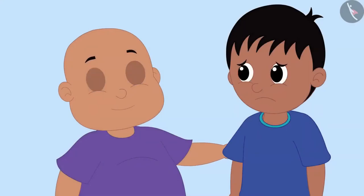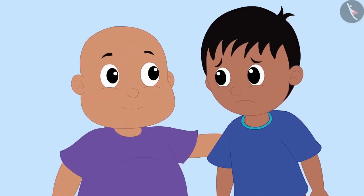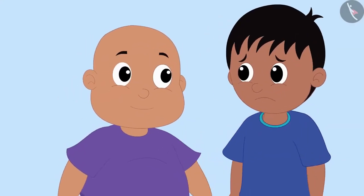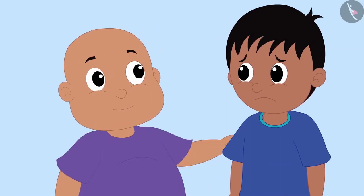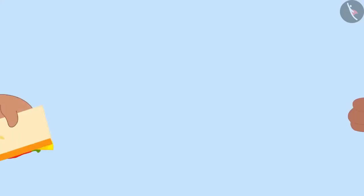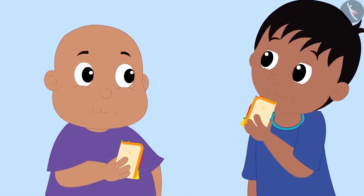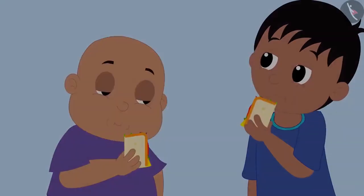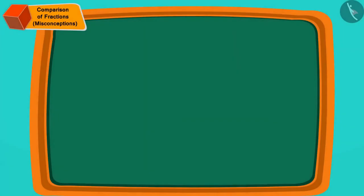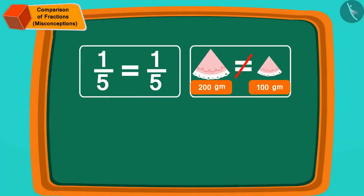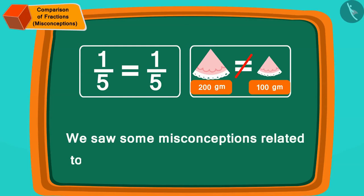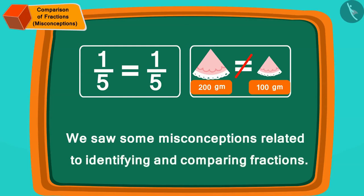Raju became depressed after knowing this. Seeing Raju sad, Babalu broke a piece of his sandwich and gave it to Raju. They both happily ate the sandwich and started enjoying the party. Children, in this video we saw some misconceptions related to identifying and comparing fractions.